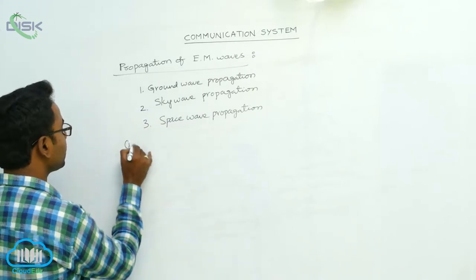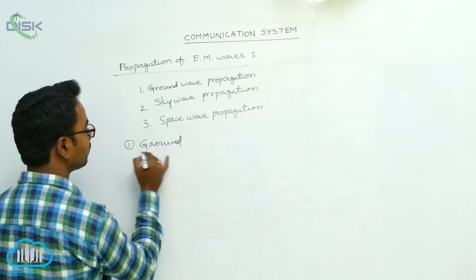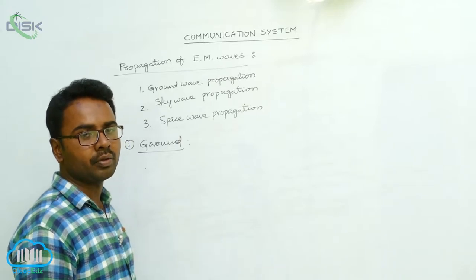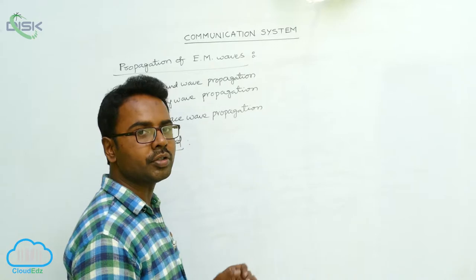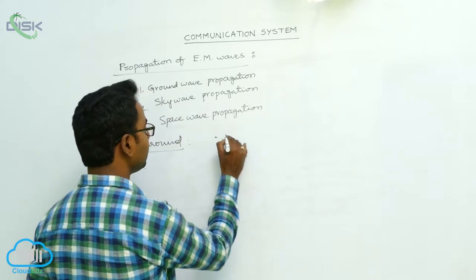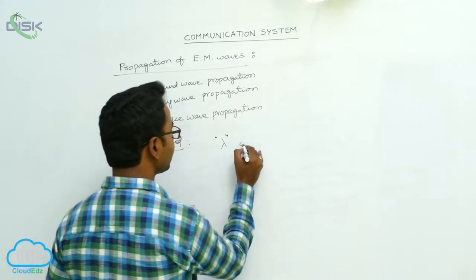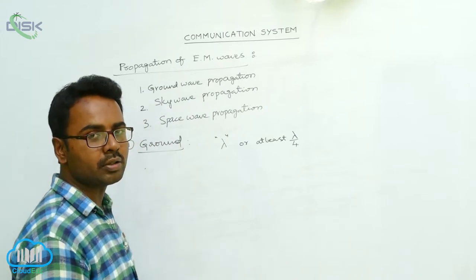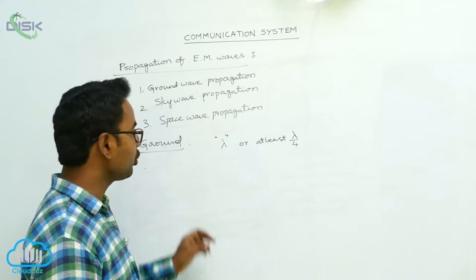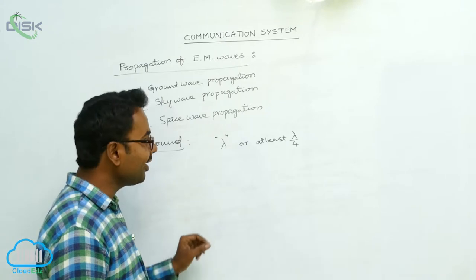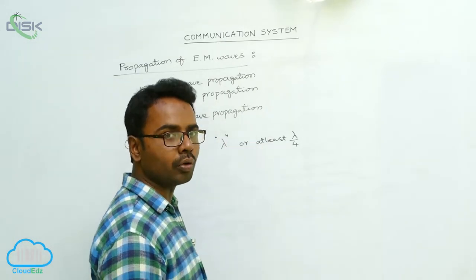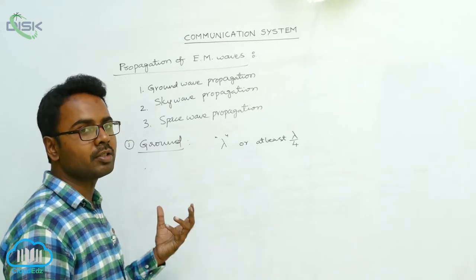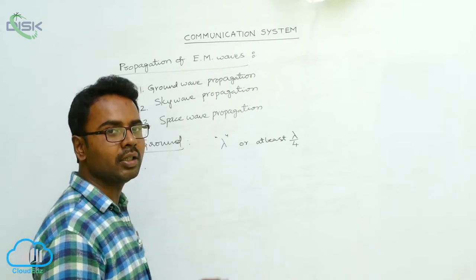First we discuss ground wave propagation. To propagate electromagnetic wave signals efficiently, the size of the antenna should be of the order of the wavelength of the signals, or at least one-fourth of the wavelength. To transmit signals of wavelength lambda, the height of the transmitting and receiving antenna should be of the order of lambda, or at least lambda divided by 4.